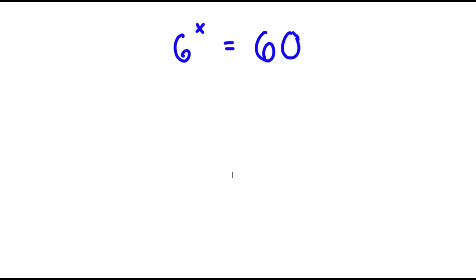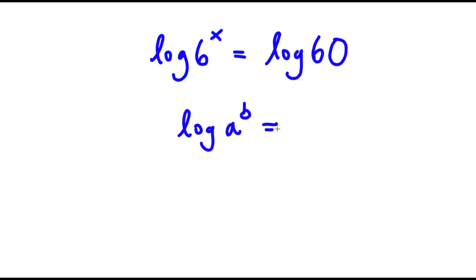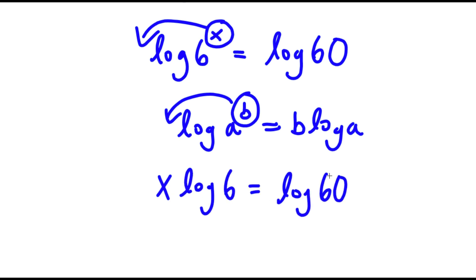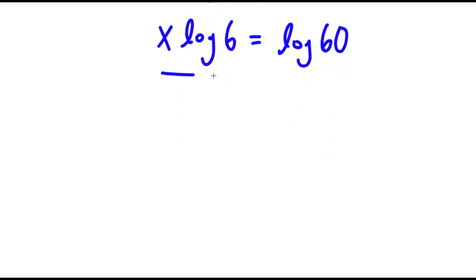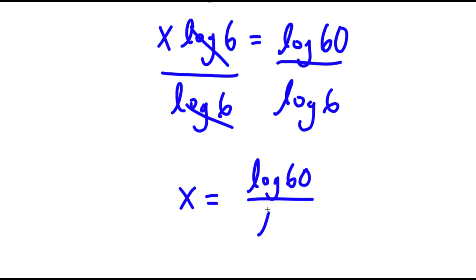All right, so in this problem I have 6 to the power of x is equal to 60. To solve this, I'm going to first start by taking the log on both sides, so I have log 6 to the power of x is equal to log 60. Now if I have something in the form log a to the power of b, I can move this exponent b to the front, so it's going to equal b times log a. So in this case I have log 6 to the power of x, and I can move x to the front, so now I have x times log 6 is equal to log 60. Now I'm going to divide both sides by log 6, so then these two cancel out and I have x is equal to log 60 over log 6.